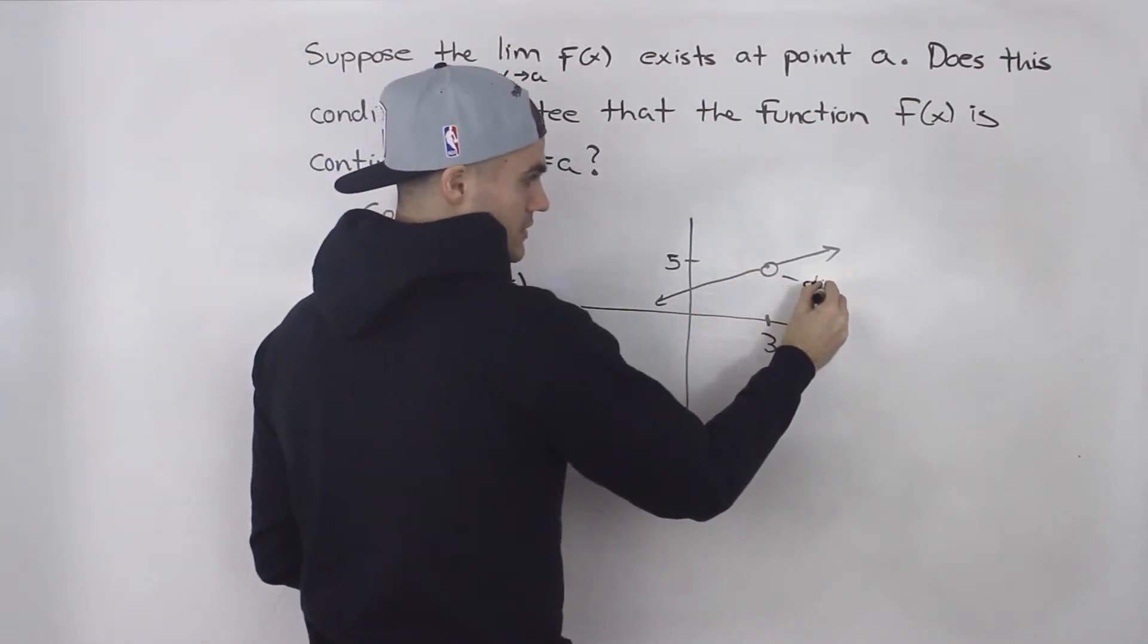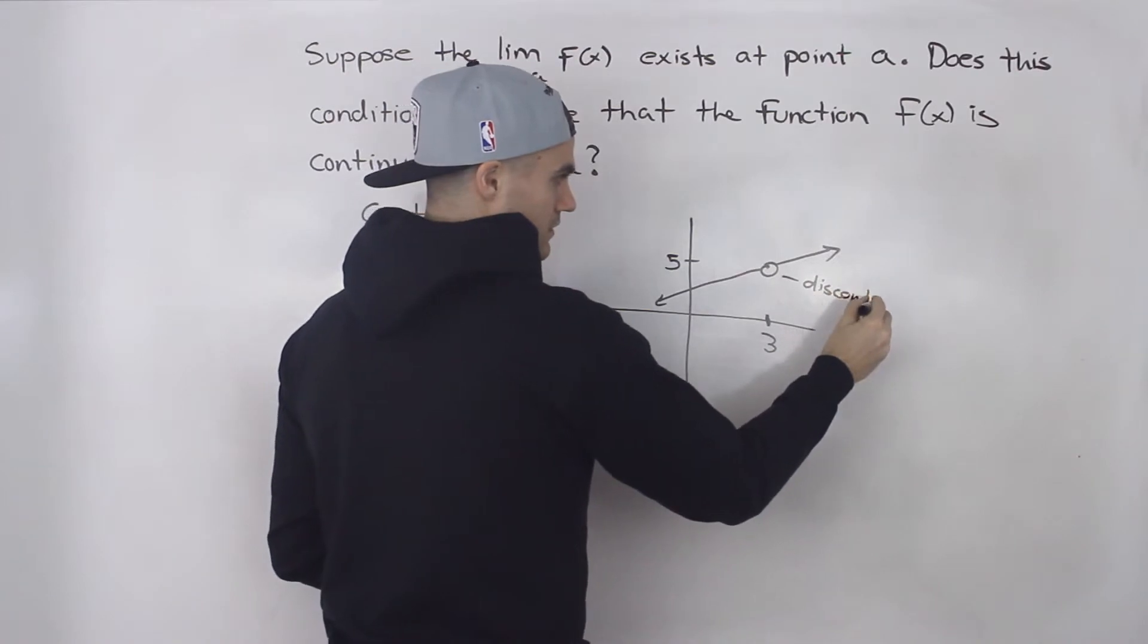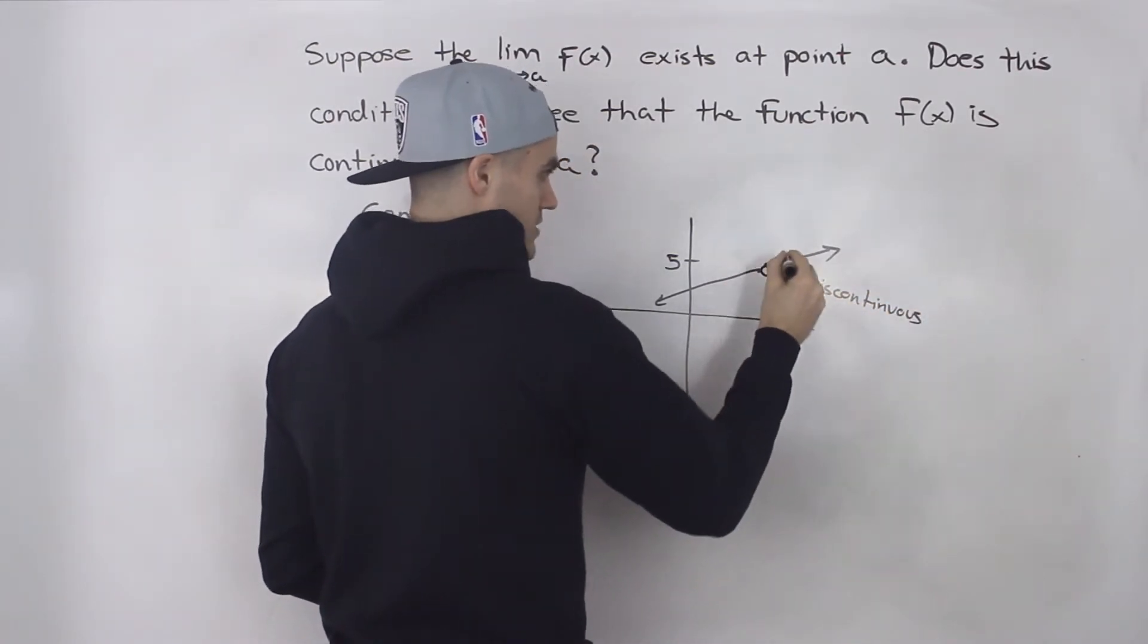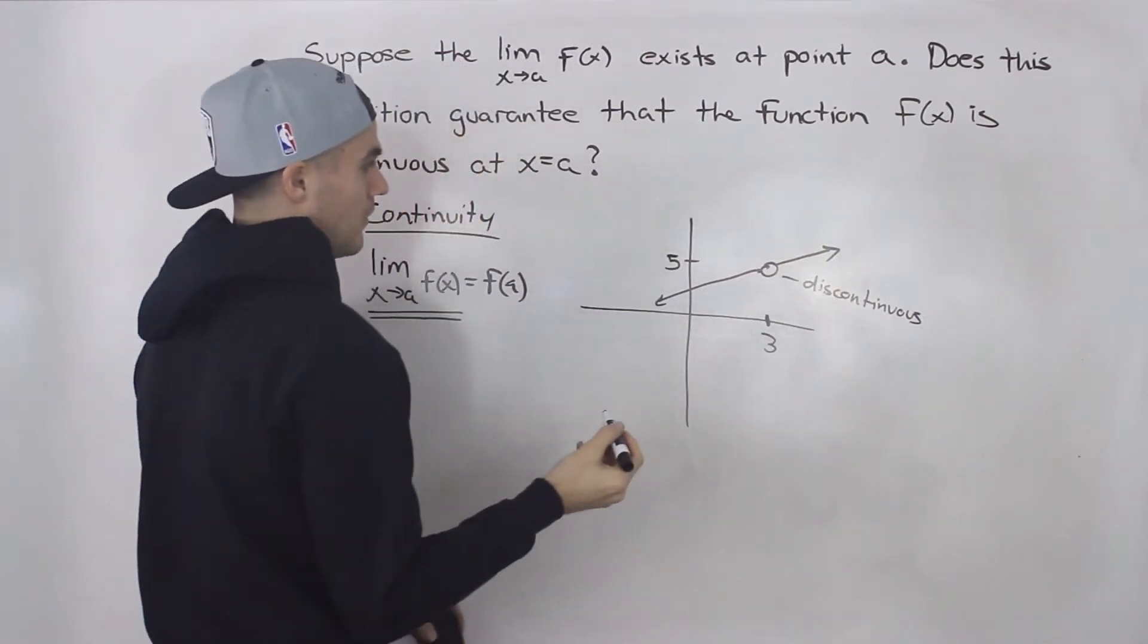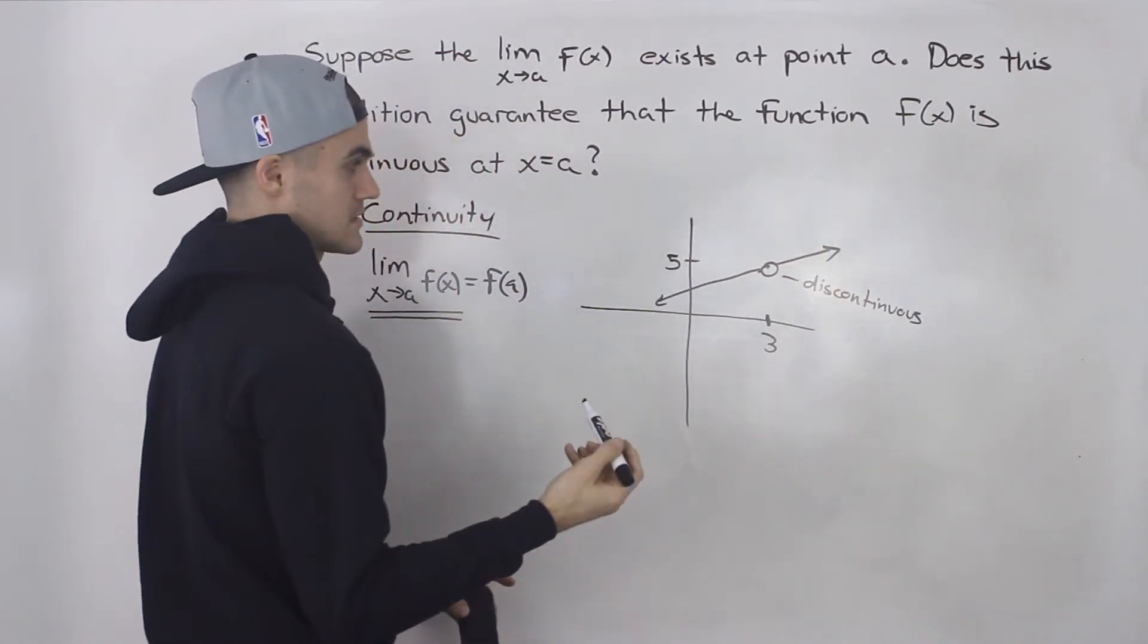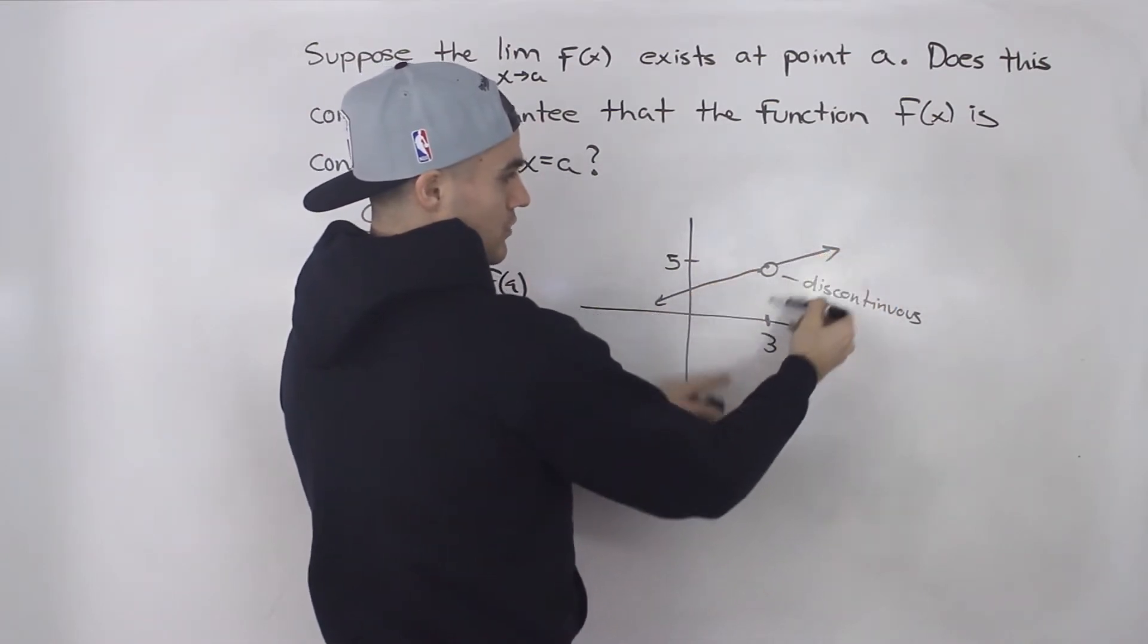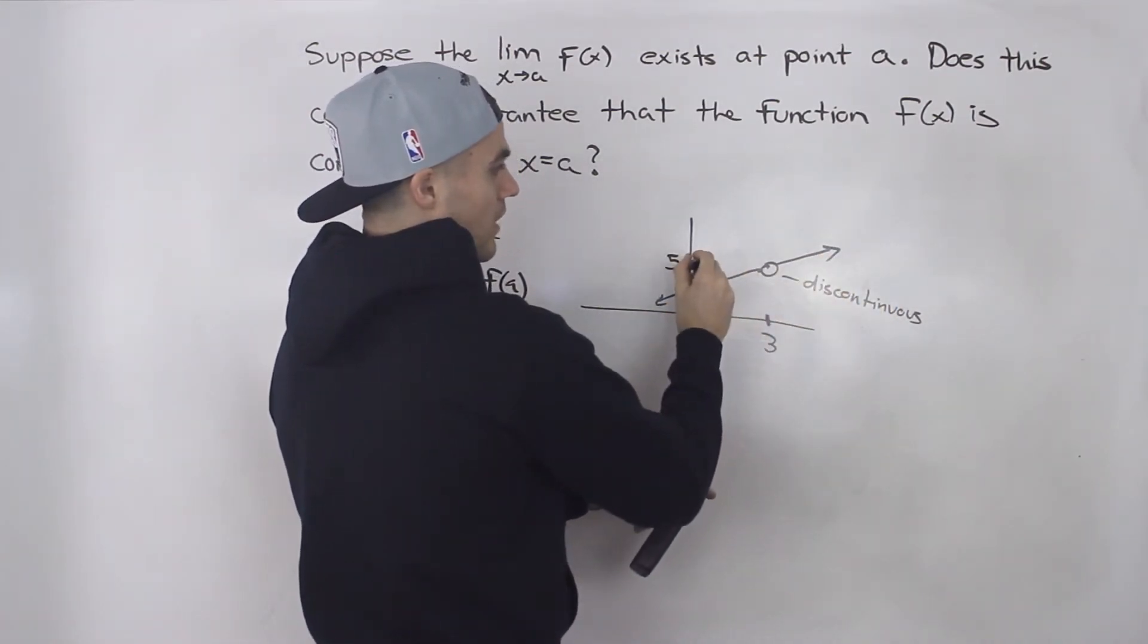Well, no, it's discontinuous because there's a hole there, right? We have to take our pencil off the paper. However, does that limit exist? Yes, the limit does exist because as we approach that x value of three from both sides, we're approaching that y value of five.